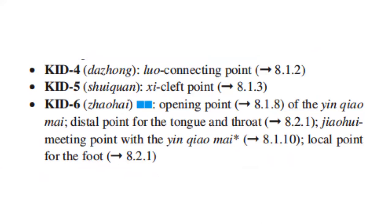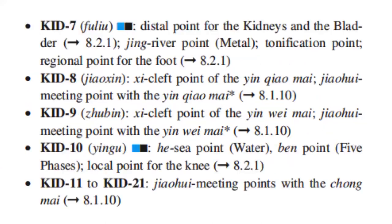Kidney 6 is the opening point of the Yin Qiao Mai, the distal point for the tongue and throat, the jiao hui meeting point with the Yin Qiao Mai, and the local point for the foot. Kidney 7 is the distal point for the kidneys and the bladder, the ji river point, which is also a metal point, the tonification point of the kidneys, and the regional point for the foot.